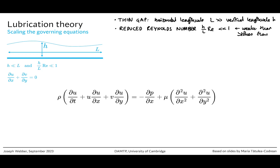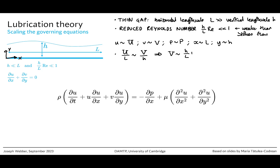Let's set our scales first. Horizontal velocities scale like capital U, vertical velocities scale like capital V, pressures scale like capital P, x scales like the horizontal length scale L, and y scales like the vertical length scale H. Incompressibility gives us our first scaling argument: u over L scales like v over H, which means v scales like H over L times u — so v is much, much less than u.